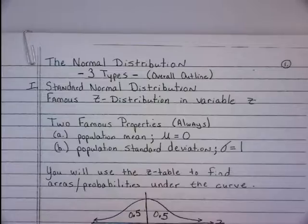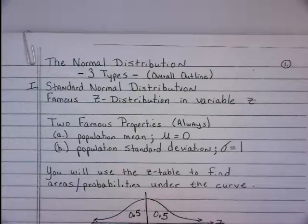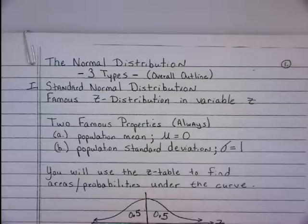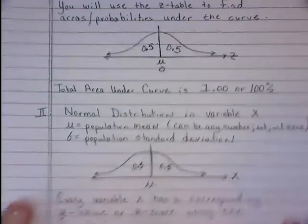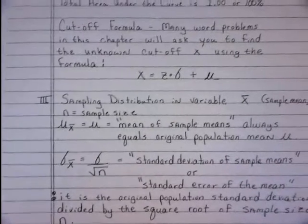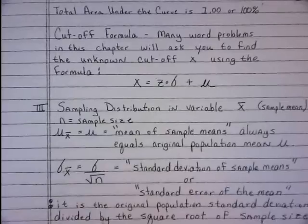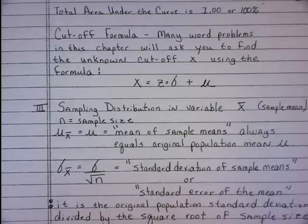Today we're going to talk about the normal distribution. This information pertains to chapter six of your textbook. There are three special normal distributions we are going to address and answer many word problems together. The first is called the standard normal distribution, the famous Z distribution with variable Z. The next is the normal distribution in variable X, where we'll answer many word problems. The third is the sampling distribution with variable X-bar.